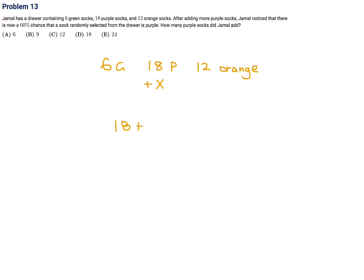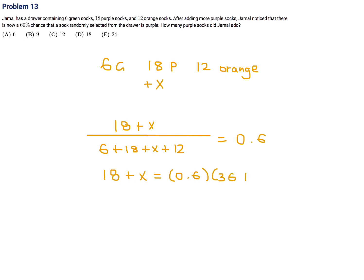The percentage of purple socks over the total — 6 + 18 + x + 12 — equals 0.6. Cross multiplying gives 18 + x = 0.6 × (36 + x), which becomes 0.6x + 21.6. So 0.4x = 3.6, and therefore x = 9. He added 9 purple socks. Number 13, the answer is B.